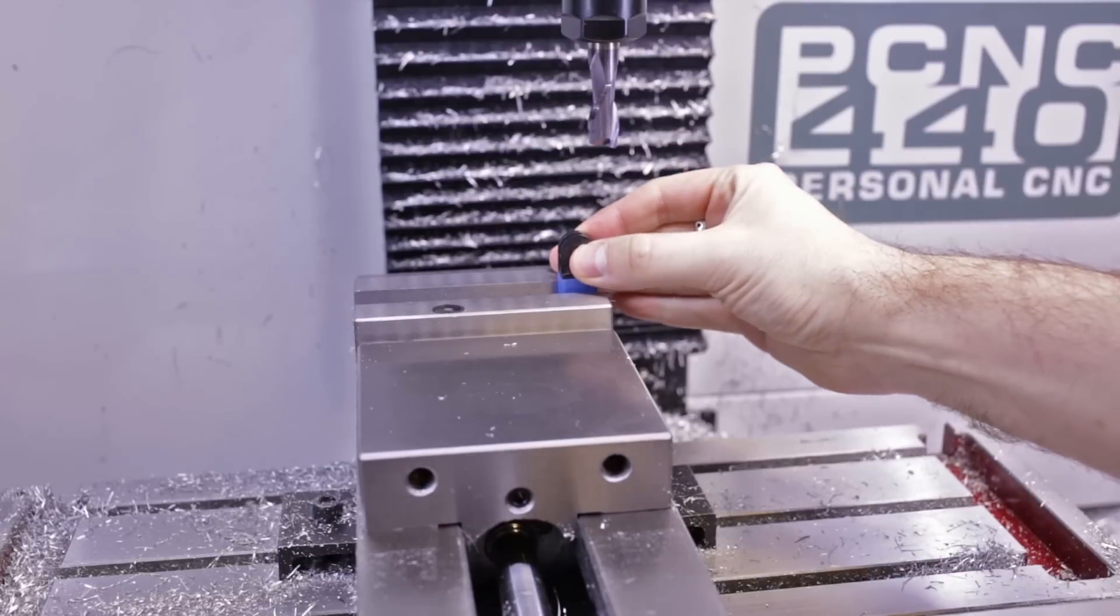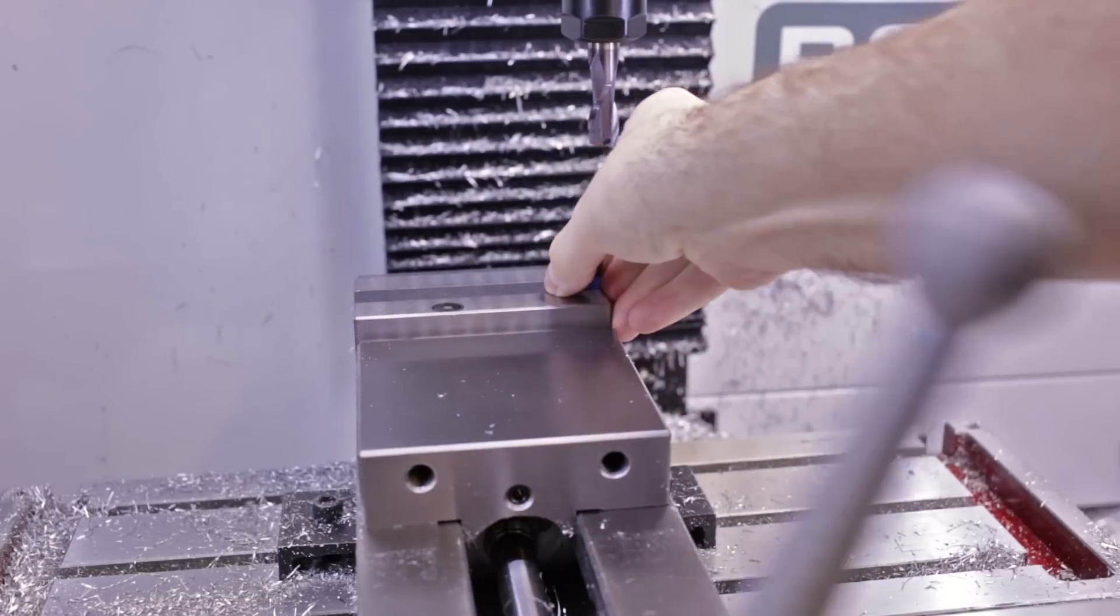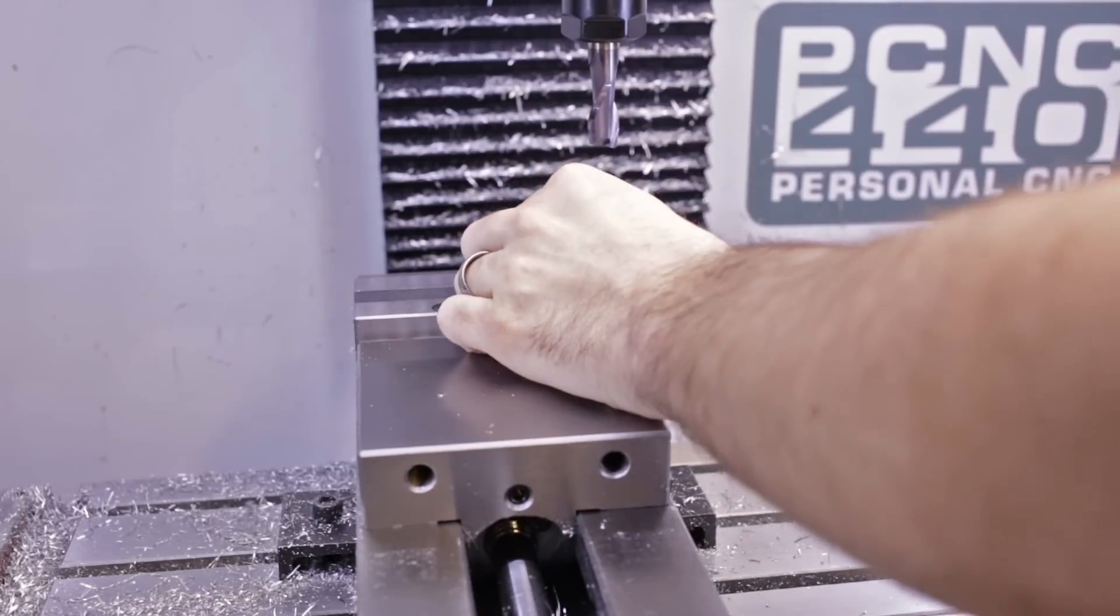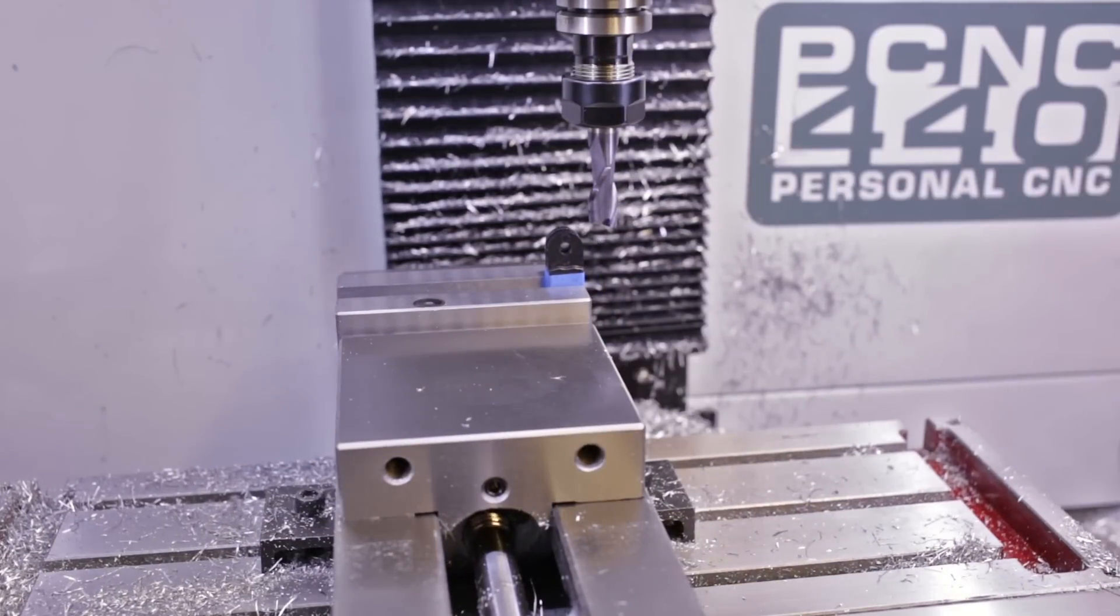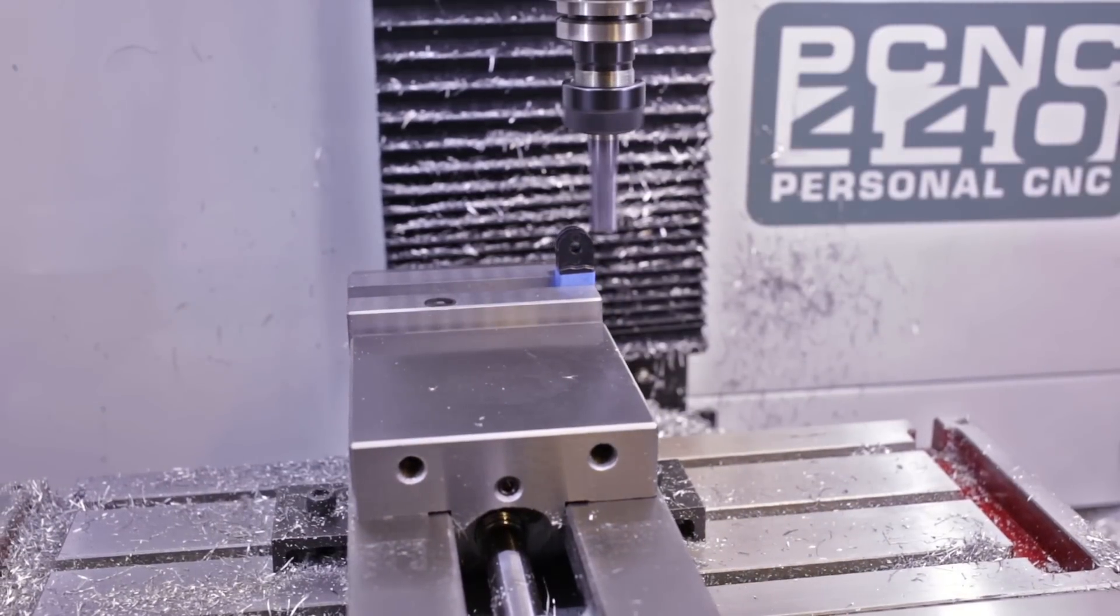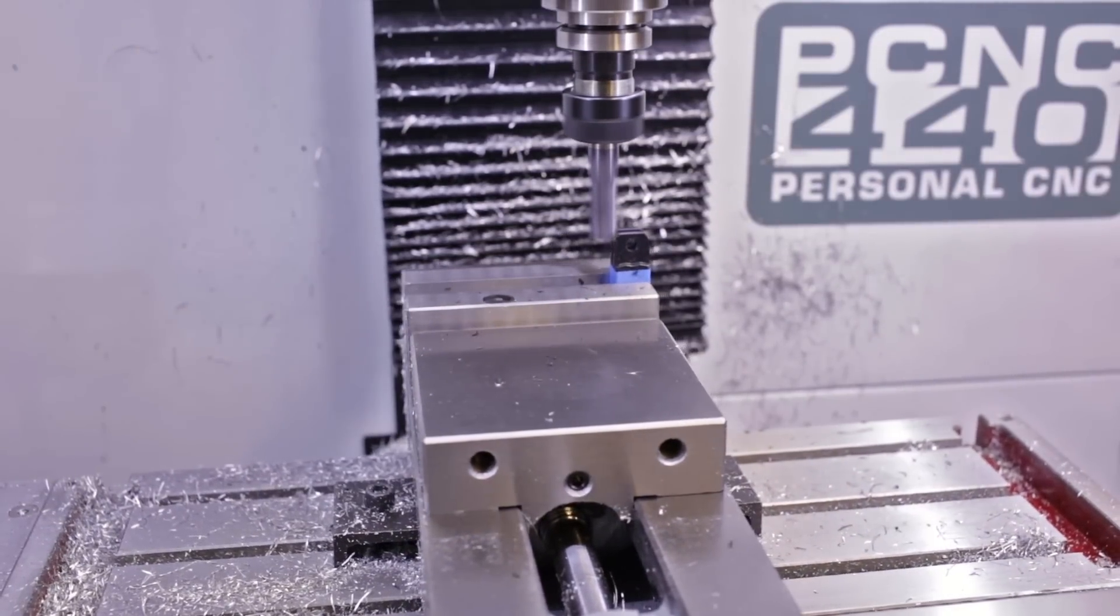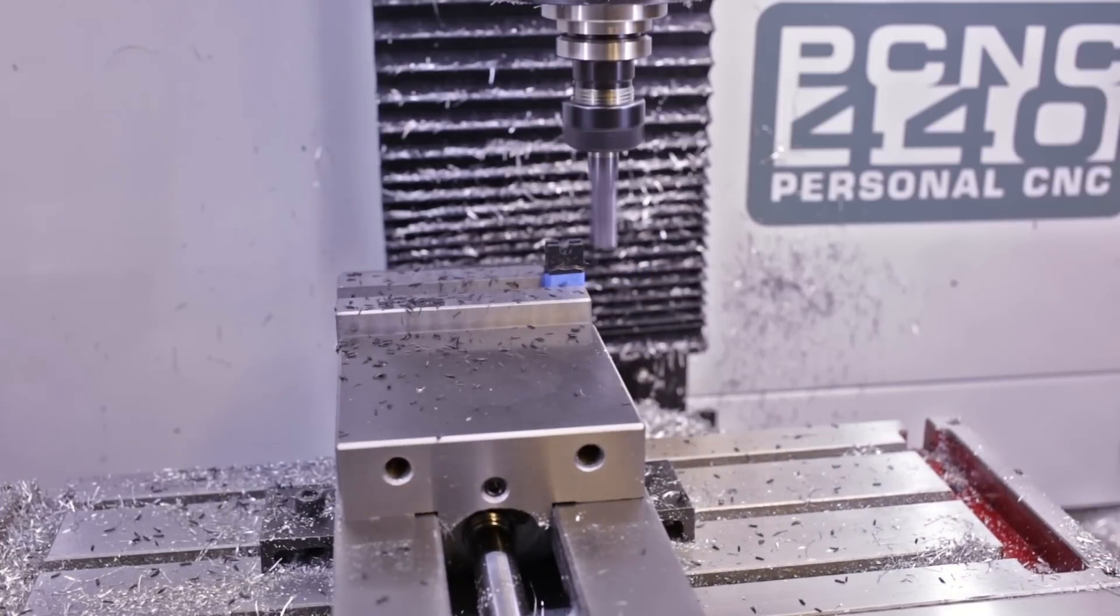I realized that using the mill for this was probably a little bit overkill. I probably could have just snapped off these little pieces and then sanded it down. But hey, I've got a CNC mill, might as well go ahead and use it. So I just used a half inch end mill to cut this down and made a nice flat surface.